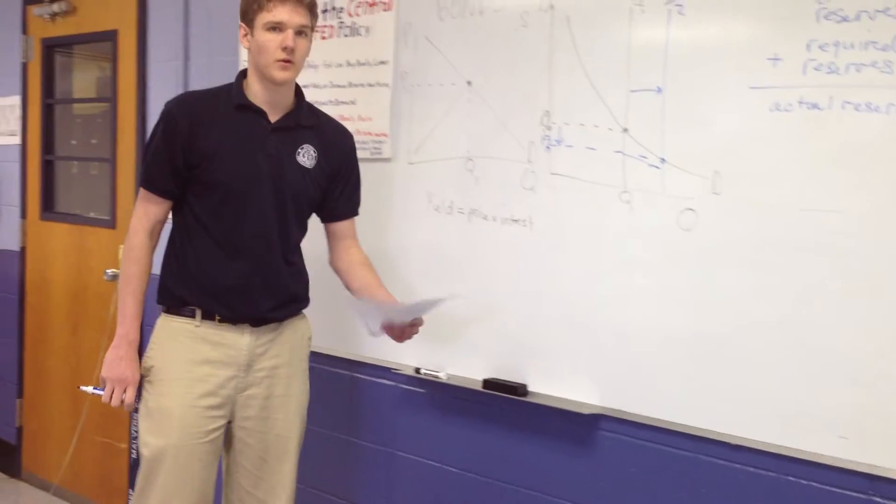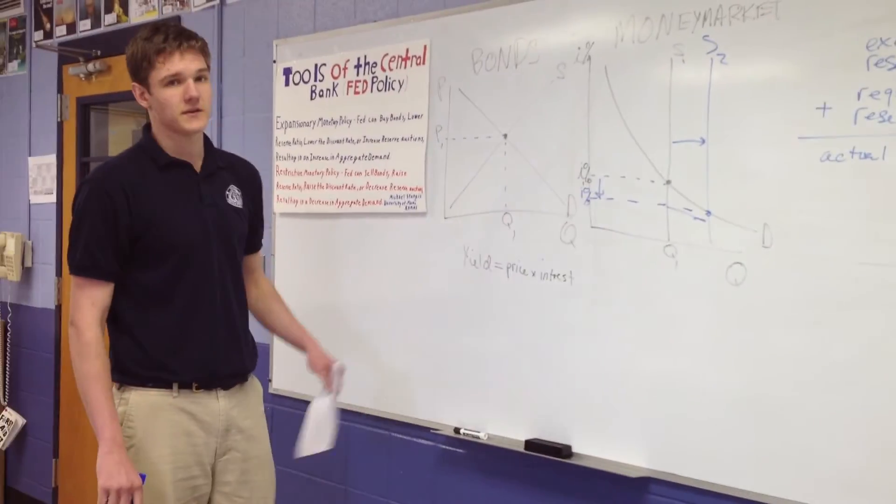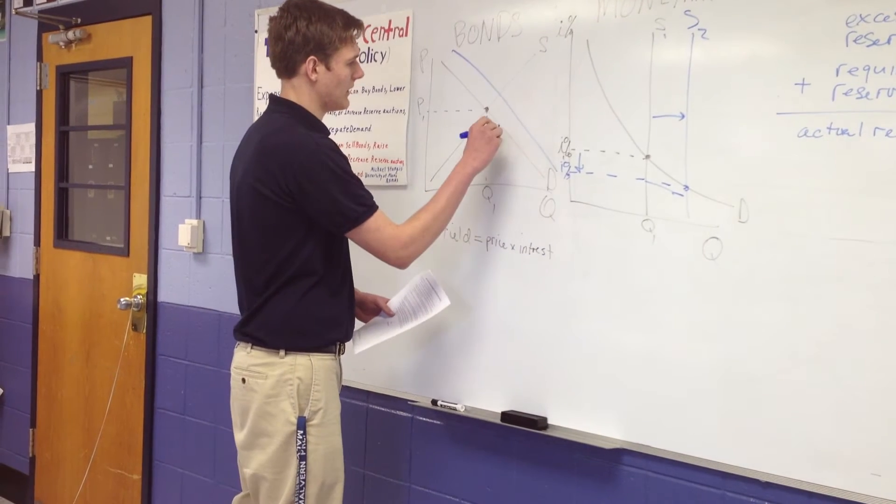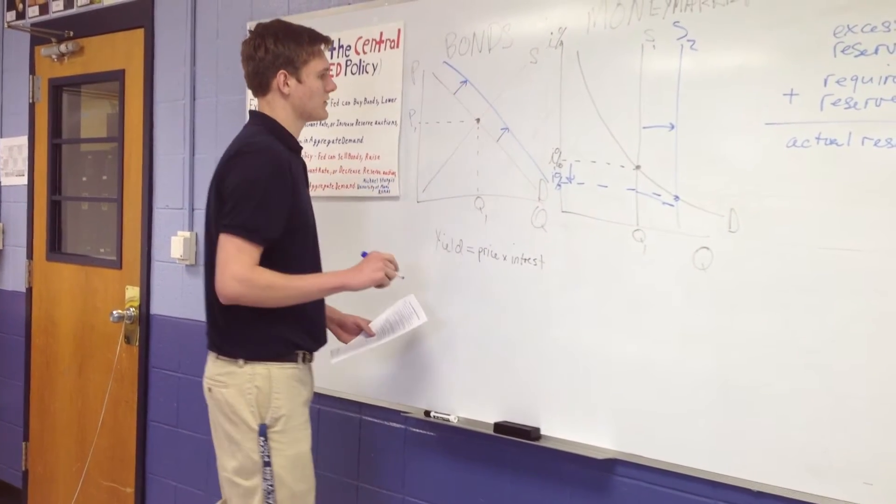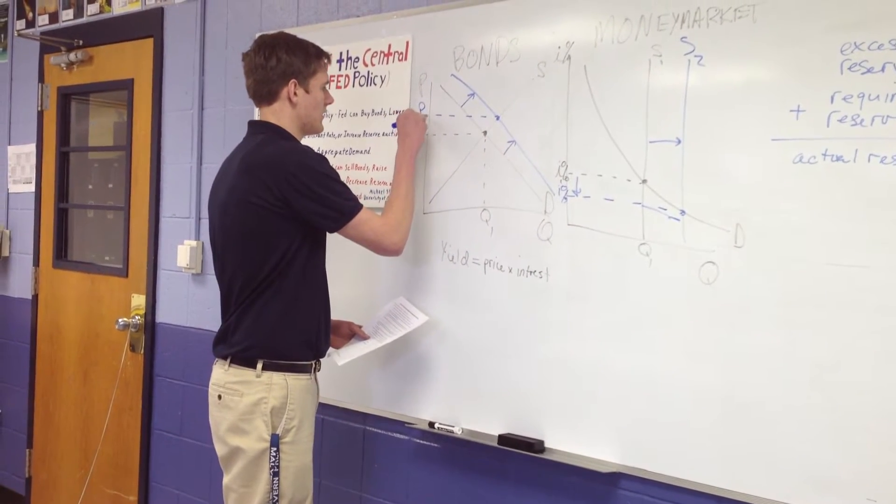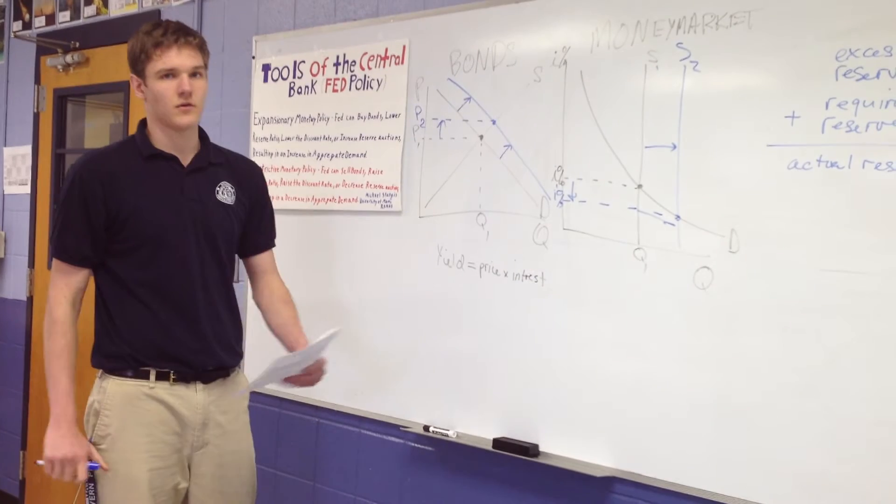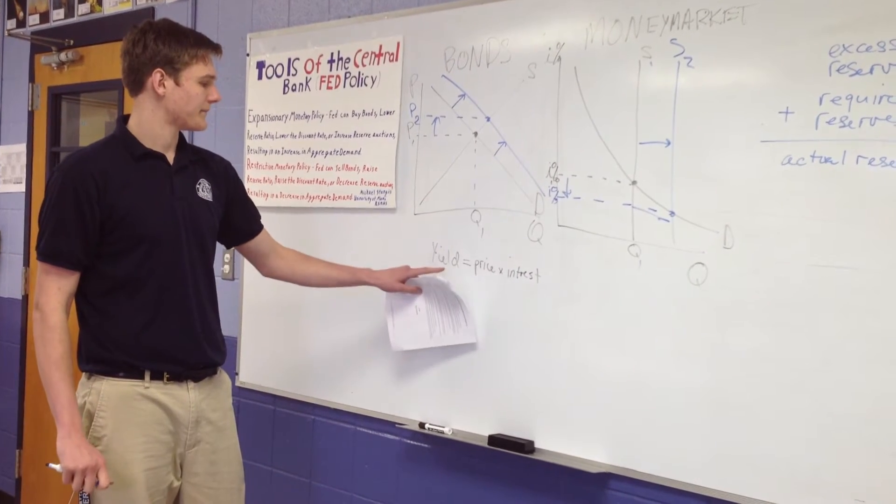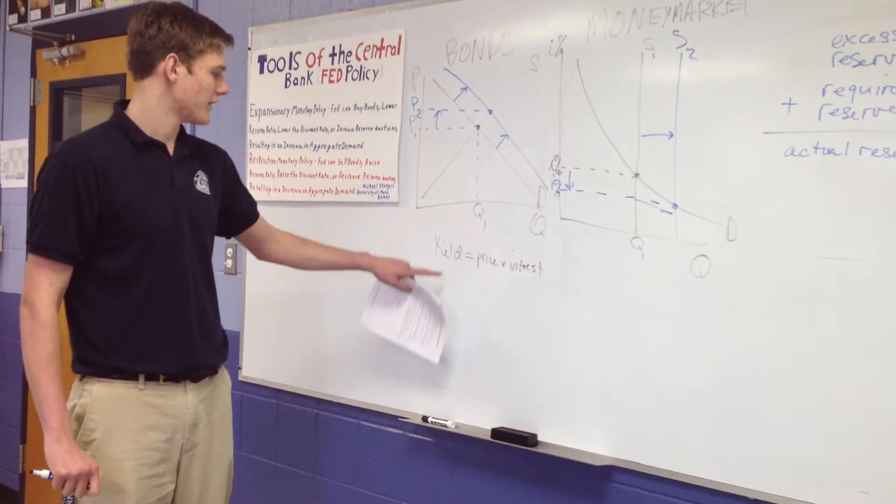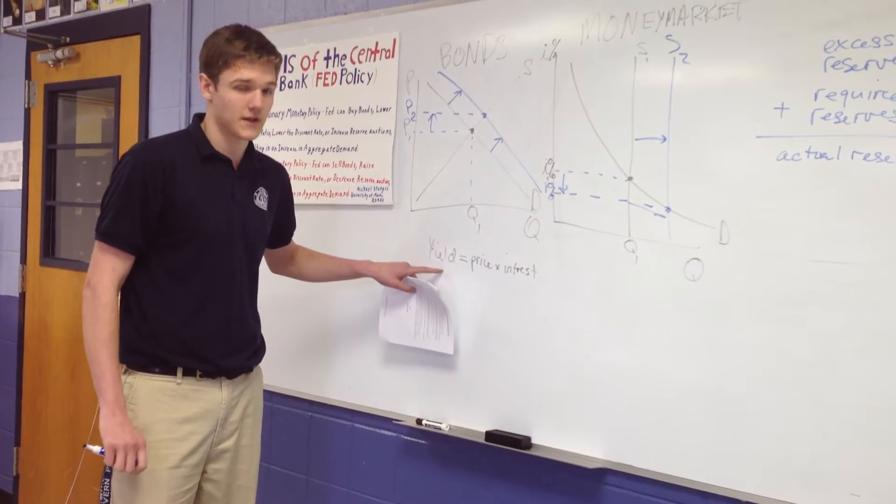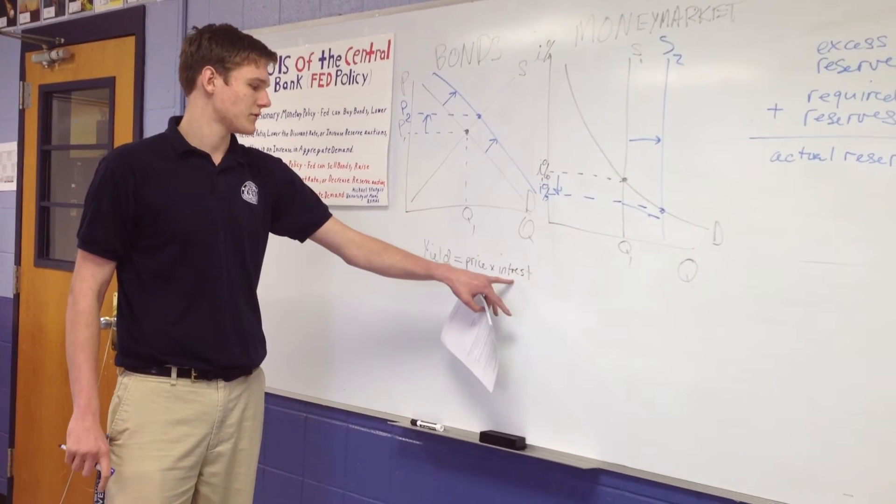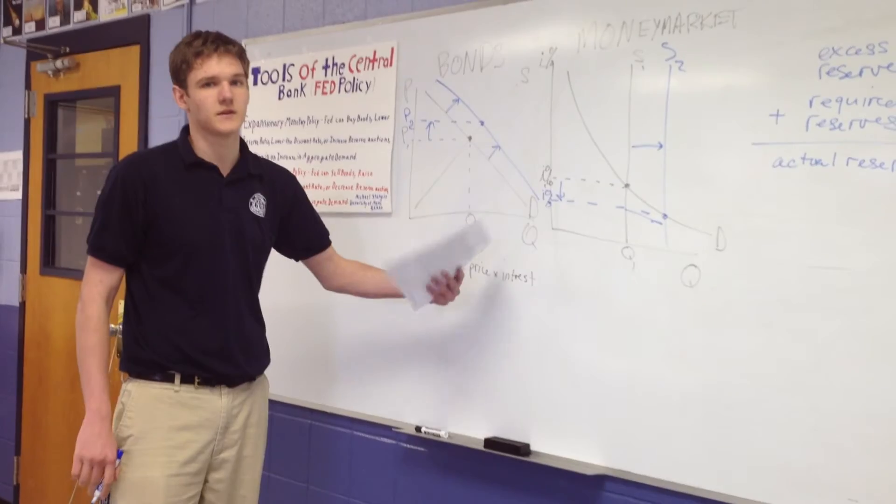And given that, what's going to happen to the price of bonds? So if the government, the Federal Reserve, demands more bonds, then we want to see what's going to happen. If demand goes up, what happens to the price? The price will also increase. And if you didn't know that, you could look at the inverse relationship between bond prices. The yield on the bond is always going to be the same. But since the interest rate went down from their buying bonds, if interest rates go down, then price has to go up because of the inverse relationship.